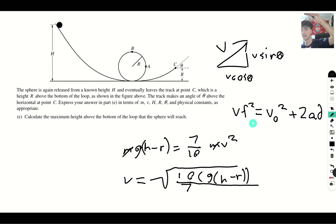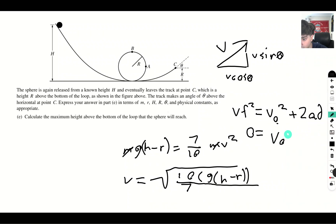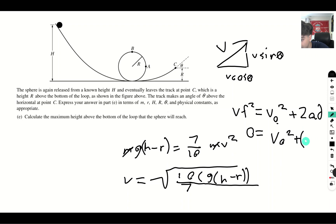Setting v_f equal to zero (at maximum height), and using the vertical component of velocity as v_i: zero equals (ten-sevenths g(h minus r)) times sin squared theta plus 2ad. Acceleration is negative g (gravity), so we get minus 2gd on the right side.